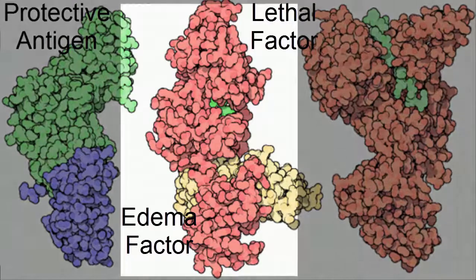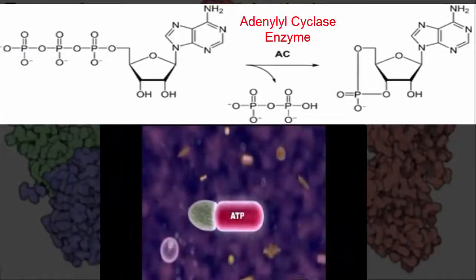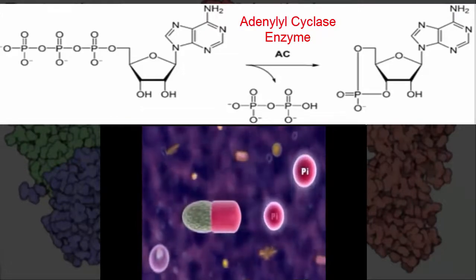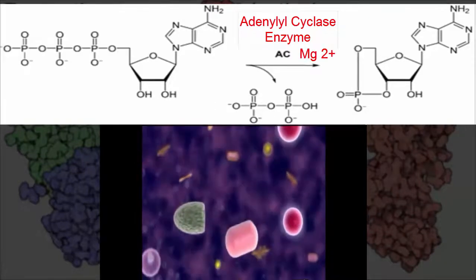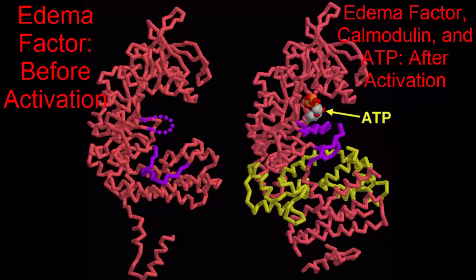The edema factor is an adenylyl cyclase enzyme. All classes of adenylyl cyclase enzymes catalyze the conversion of ATP to 3',5'-cyclic AMP (cAMP) and pyrophosphate. As a result, these enzymes require a magnesium cofactor to shield the negative charge of the phosphate groups. Inside the cell, the edema factor is activated by binding to calmodulin, a calcium-binding messenger protein. Calmodulin produces a conformational change making the active site more available. Within this activated form, the two purple loops form part of the active site, and EF can hold ATP more efficiently and convert it to cyclic AMP at a faster rate.